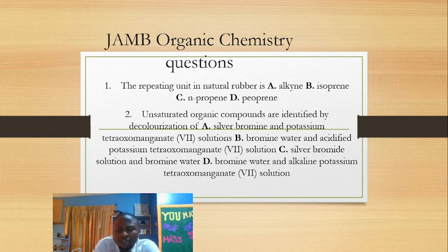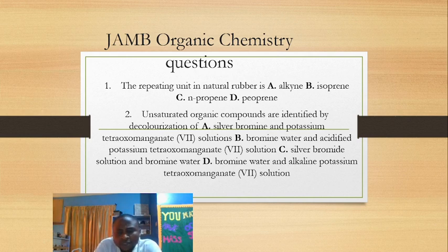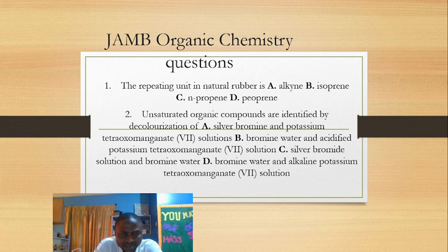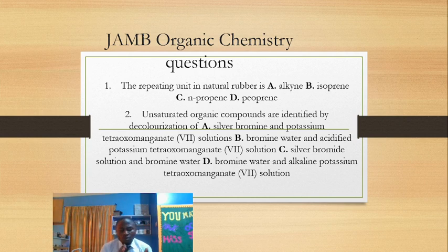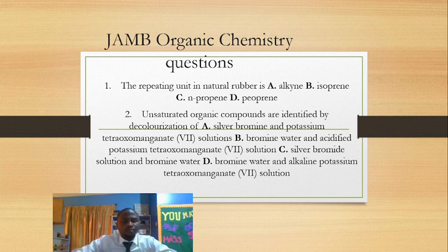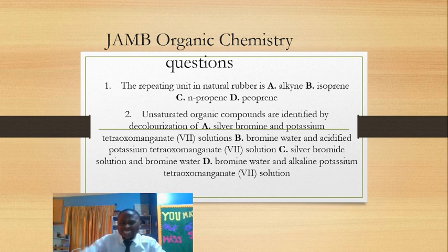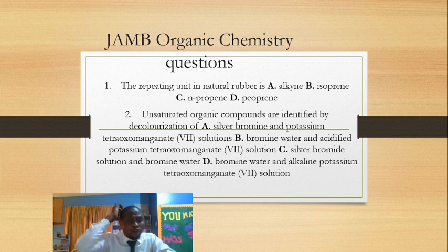Number one: bromine water. Number two: acidified KMnO4 — potassium tetraoxomanganate(VII). Number three: acidified potassium heptaoxodichromate(VI), K2Cr2O7. For bromine water, unsaturated organic compounds will decolorize it. For acidified KMnO4, which is purple in color, unsaturated organic compounds will also decolorize it — change its color from purple to colorless.